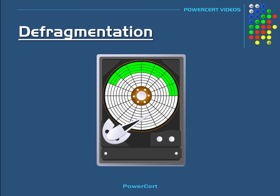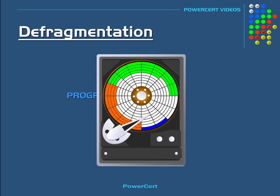Now let's install another program, and let's install one more program. As you can see, the data files of each of these programs were installed on the hard drive in close proximity to each other, which means that when you want to run one of these programs, the computer will run quicker because the hard drive doesn't have to do extra work by fetching data from different areas of the hard drive.